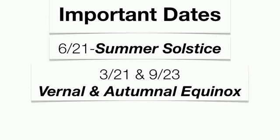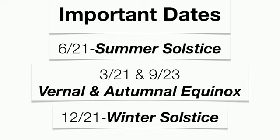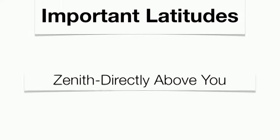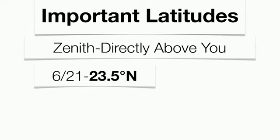There are a couple of important dates. Summer solstice is the first day of summer, occurring on June 21st. March 21st and September 23rd are your vernal equinox and autumnal equinox — the first day of spring and first day of fall. We also have the winter solstice on December 21st, the first day of winter. On June 21st, at 23.5 degrees north — the Tropic of Cancer — the sun is going to be at the zenith, which is the point directly above you. The zenith represents 90 degrees above you, producing the greatest angle of insolation on the planet.